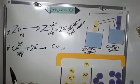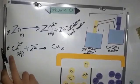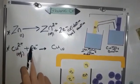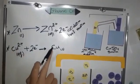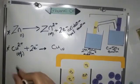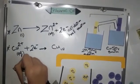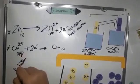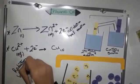On the other side, we see that copper plus two gains two electrons and turns to copper solid. And this is called reduction of the reaction.